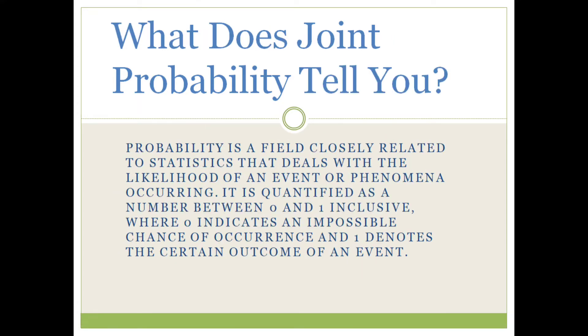What does joint probability tell you? Probability is a field closely related to statistics that deals with the likelihood of an event or a phenomenon occurring. It is quantified as a number between zero and one inclusive, where zero indicates an impossible chance of occurrence and one denotes the certain outcome of an event.